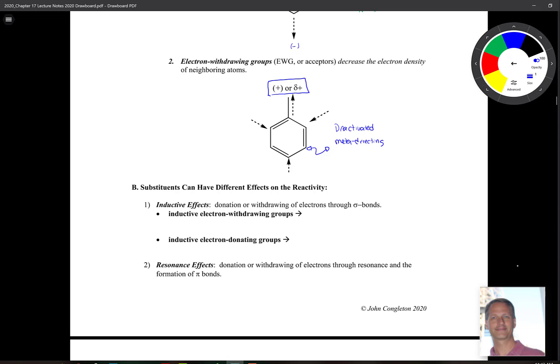Now, these can have different effects on reactivity. There's two ways that these substituents can affect reactivity. The first is through inductive effect. So remember, induction occurs through sigma bonds. It's the donation or withdrawing of electrons through single or sigma bonds. The example that we're going to see of inductive electron withdrawing groups might be halogens. And we'll look at this in more detail as we go through this a little bit more.